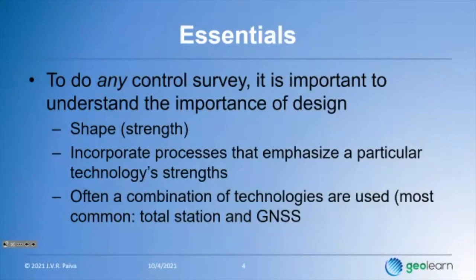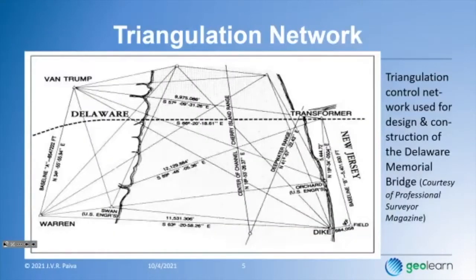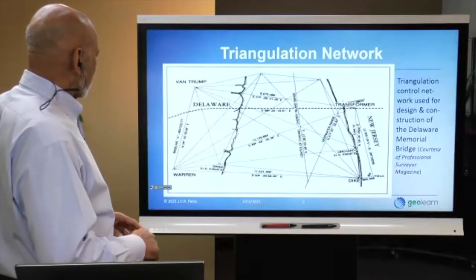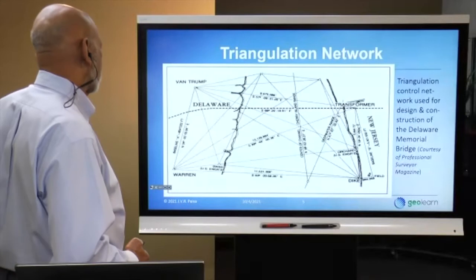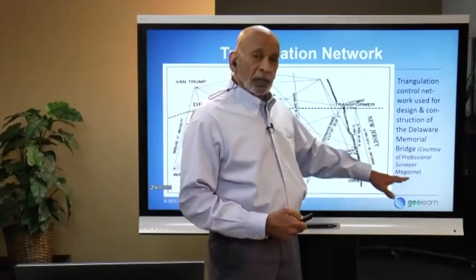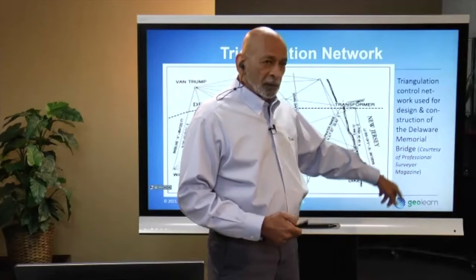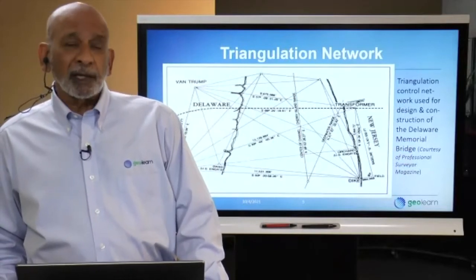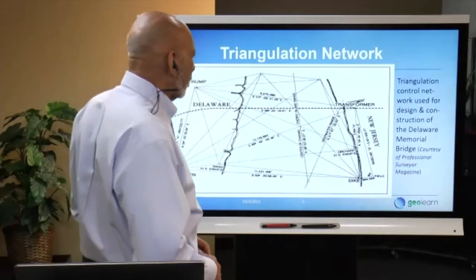Here's a triangulation network — this happens to be a real one done for the construction of the Delaware Memorial Bridge. You can see some stations and a whole bunch of observations. This was mostly triangulation, though I wouldn't be surprised if there was some trilateration. GPS probably wasn't used at this time since it's fairly far back. This sketch was reproduced in Professional Surveyor Magazine, now called XYHT.